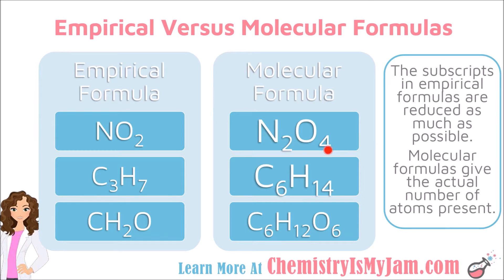Let's look at some examples. N2O4 is a molecular formula. Notice that 2 and 4 are both divisible by 2, so you could reduce those numbers to get to a lower form. The empirical formula for this molecular formula is NO2, where both of the subscripts have been divided by 2.